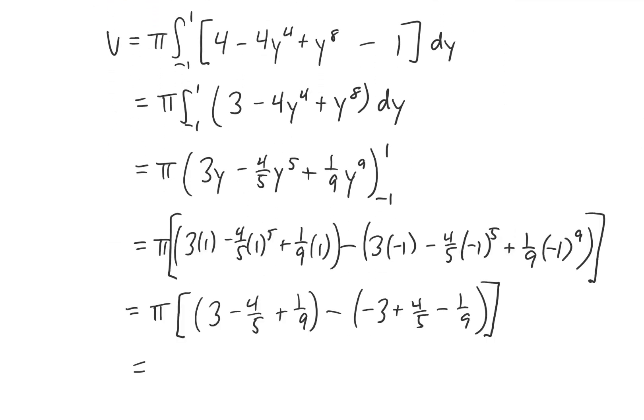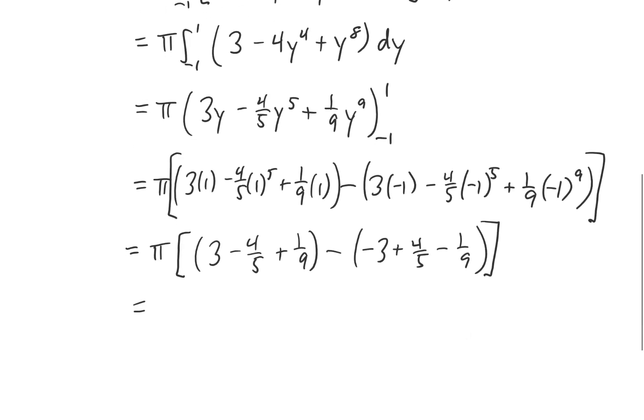You'll notice that simplifying gives us the same expression twice. And if we combine all these terms using a common denominator, we end up getting 208 45ths pi.